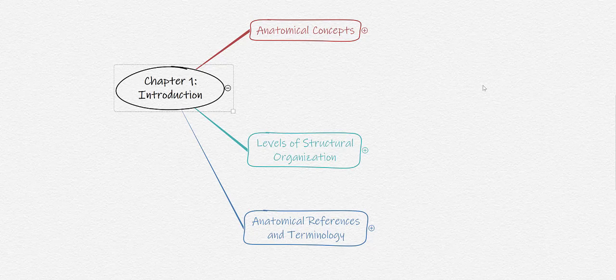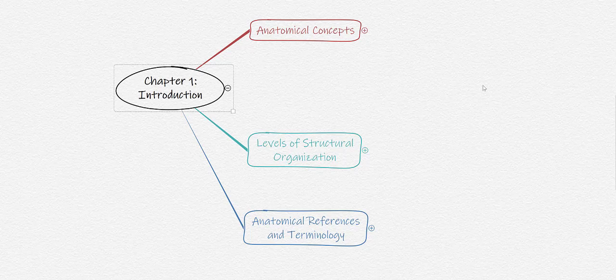Let's take a look at an overview of the introduction. There are three main things that I want you to take away from the introduction, and they are anatomical concepts, levels of structural organization, and anatomical references and terminology.